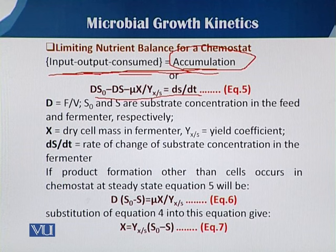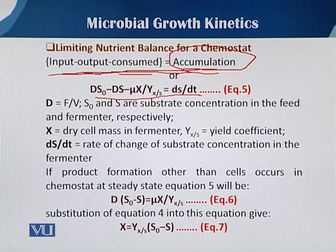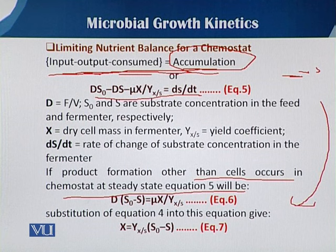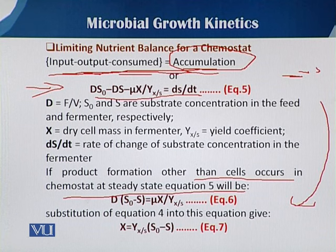Here D equals flow rate over volume, s₀ and s are the substrate concentrations, x is the dry cell mass, and Y_x/s is the yield coefficient with respect to the substrate. For equation 5, if the product formation is other than the cell — meaning our product is not the cell itself — then in chemostat steady state, equation 5 can be transformed. When the product is associated with the biomass, we use equation 5; equation 6 applies when the product is not associated with biomass.